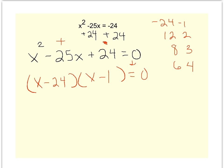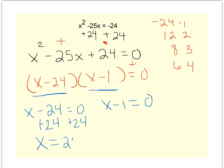So it looks like I have two different terms, I've got to split it up and set them equal to 0. So I'm going to add 24, so I have x equals 24, and I'm going to add 1, so I have x equals 1.